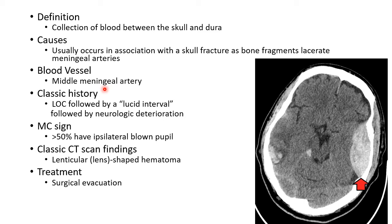Now let us see about the presentation of a case of epidural hematoma. The classical history will be loss of consciousness followed by a lucid interval, when the patient will be apparently normal, which will be followed by neurologic deterioration. The most common sign in epidural hematoma is ipsilateral blown pupil, seen in more than 50% of cases.